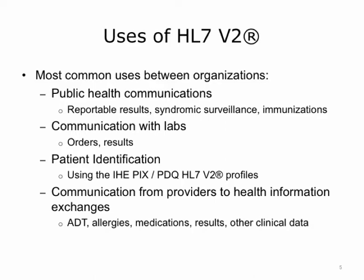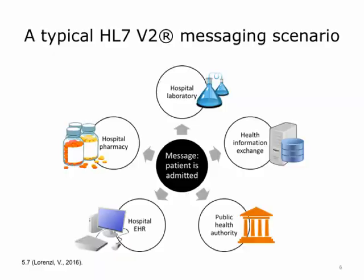The most common uses of HL7v2 between organizations are messages for public health communications, such as reportable results, syndromic surveillance, and immunizations. Another common use is for order and result communication between doctors and commercial labs. A third common use of HL7 messages is for identifying and matching patients in a health information exchange. HL7v2 is also a common vehicle providers use to share health information about patient visits to a health information exchange.